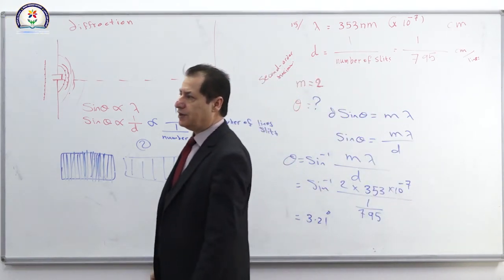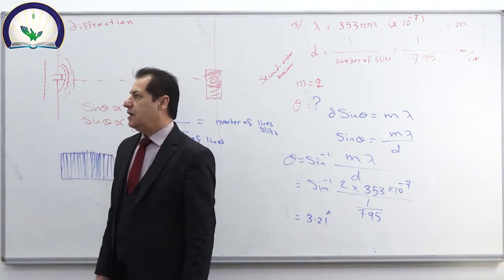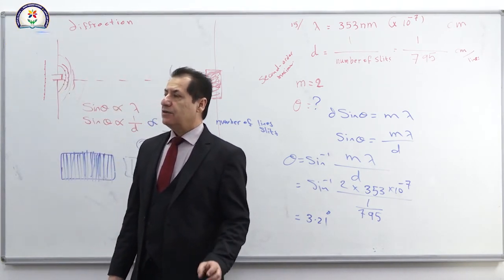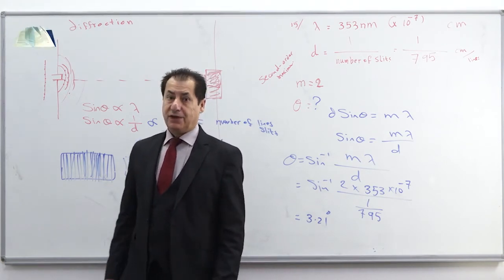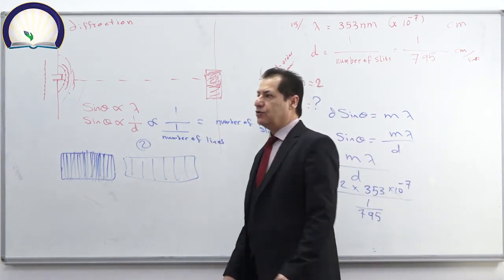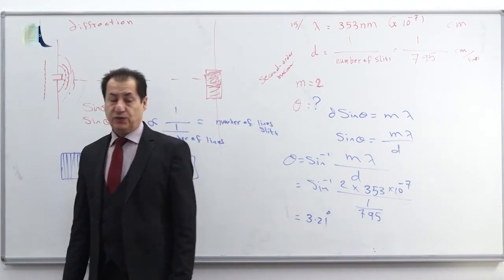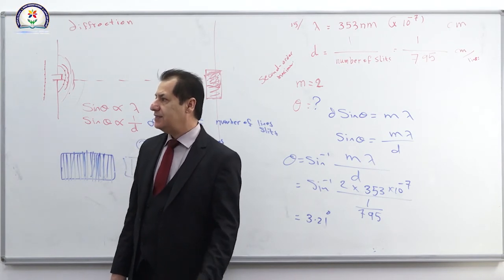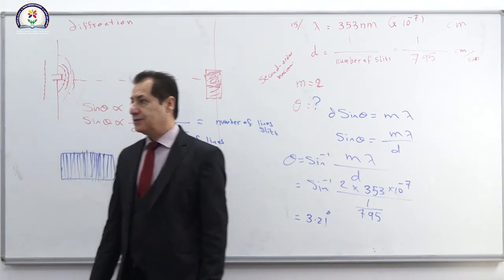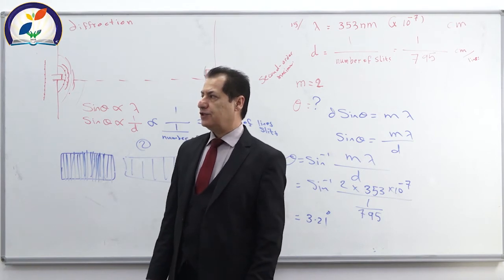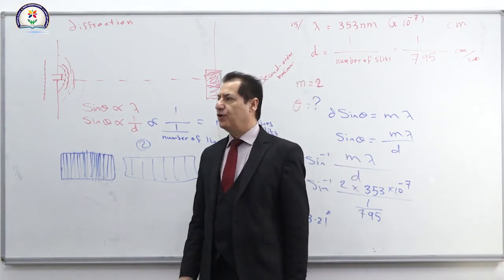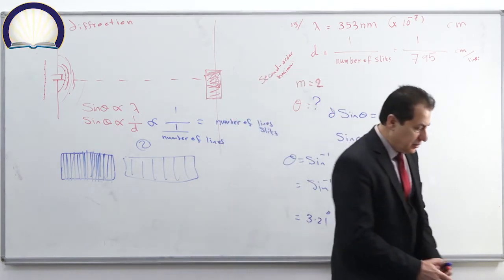Question number nineteen: give two examples where the uniform direction of laser light is advantageous, and two where high intensity is advantageous. For uniform direction: distance measurement and compact disc players. For high intensity: laser surgery and fiber optics communication.